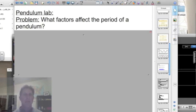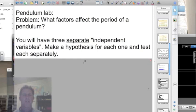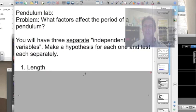You should have pendulum lab, the problem stated clearly in the spiral. And then below that, we're going to investigate three separate independent variables. So you'll need to make a hypothesis for each one and test each one separately. It takes a lot of organization for this lab. Here's an example. We have one factor we've identified as length that may be affecting the period of a pendulum.